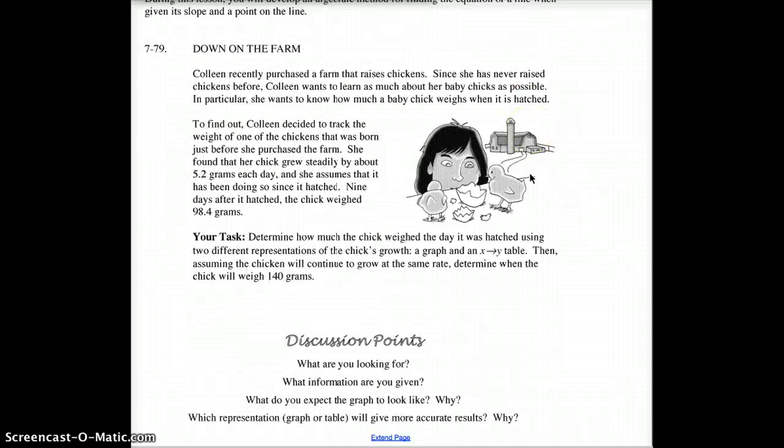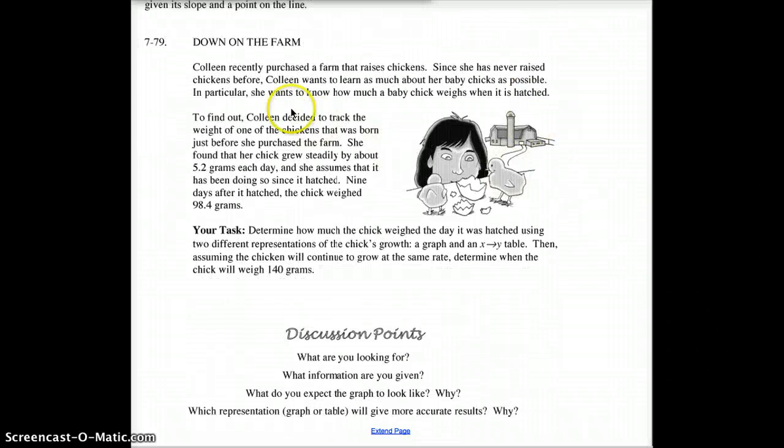Question 79. Down on the farm. Colleen recently purchased a farm that raised chickens. Since she has never raised chickens before, Colleen wants to learn as much about the baby chicks as possible. In particular, she wants to know how much a baby chick weighs when it's hatched. She bought a bunch of chickens and they've already hatched. So to find this out, Colleen decides to track the weight of one of the chickens that was born just before she purchased the farm. And when they mean just before, they don't mean like the day before. Actually, you're going to find out here in a moment.